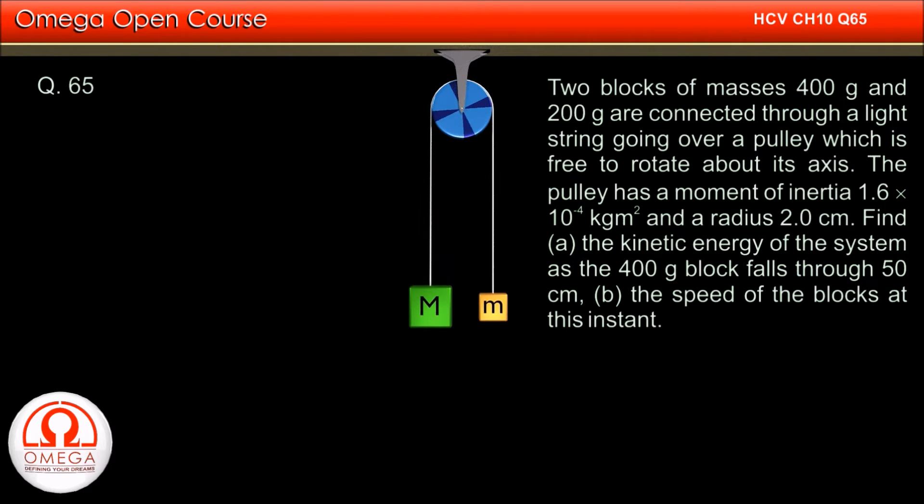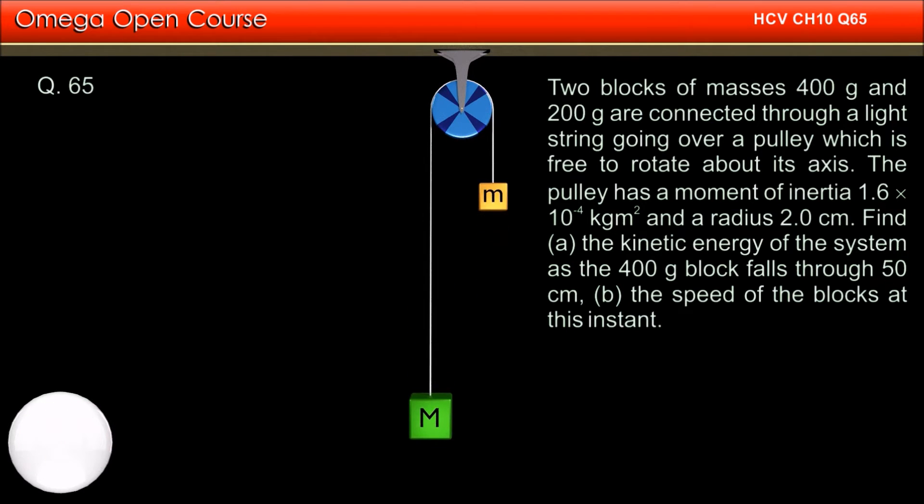Find (a) the kinetic energy of the system as the 400 gram block falls through 50 cm, (b) the speed of the blocks at this instant.